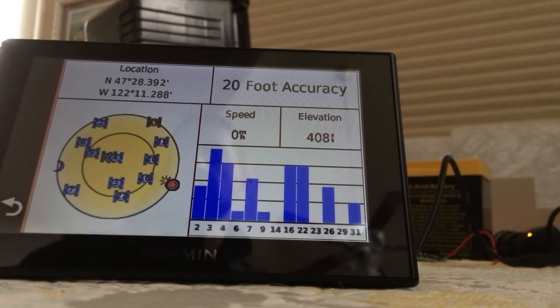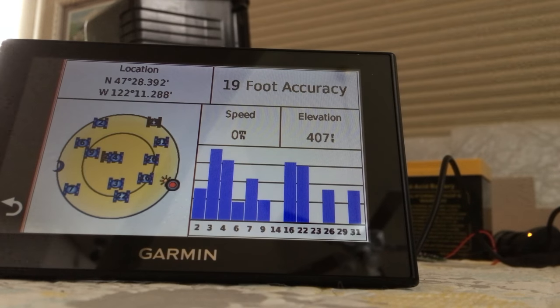This shows you the satellite constellation that's viewable by the meter. Those channel bars 2, 3, 4, 6, 7, 9, 14, 16, and so on, indicate signal strength from various GPS satellites.